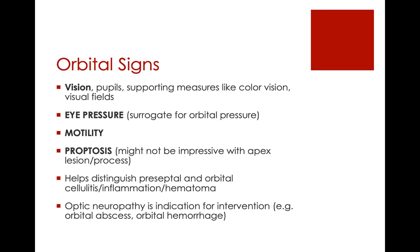This can help you distinguish between preseptal and orbital cellulitis. Sometimes when patients come in with a lot of eyelid swelling, it can be really difficult to tell if they have proptosis. You can get pretty significant swelling from preseptal cellulitis, but everything else should be normal — vision, eye pressure, and motility — which would reassure you it's just a preseptal process. Optic neuropathy is generally always an indication for intervention of some sort.